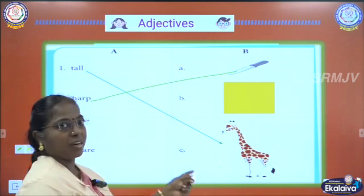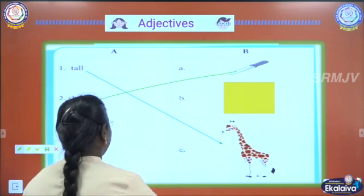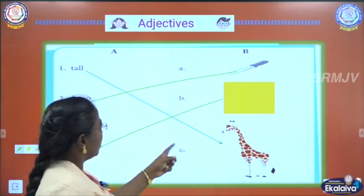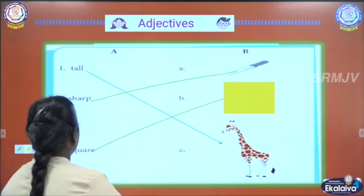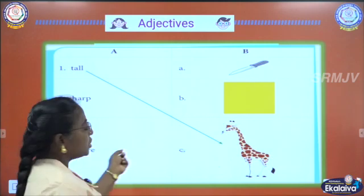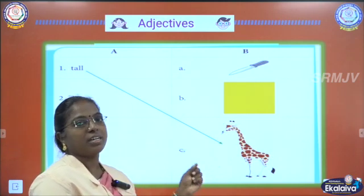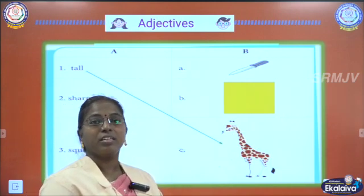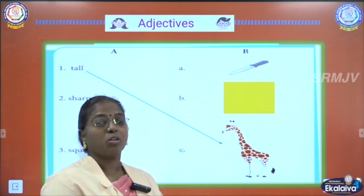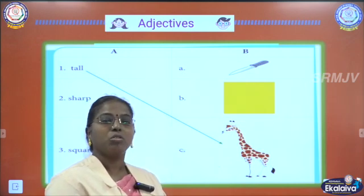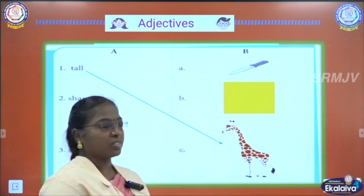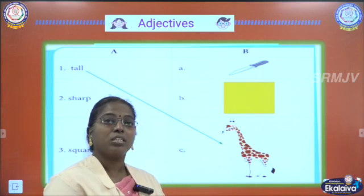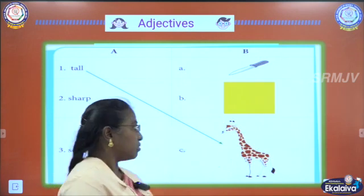Then square — which is square here? This is a square shape. You just draw a line for square. And all these shapes, we can say are adjectives — whether it is a rectangle or a square or a triangle. All these shapes are called adjectives. And all the colors — green, red, black, white — all the colors are adjectives. And size — whether it is big or small or huge or large — all the sizes we call as adjectives.